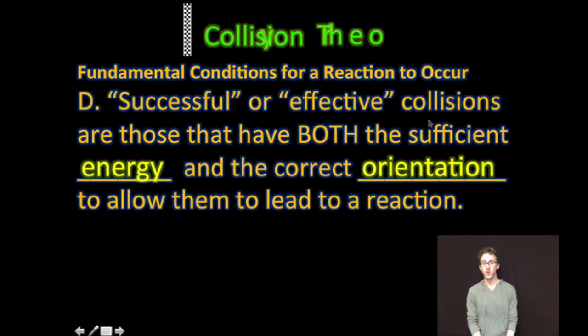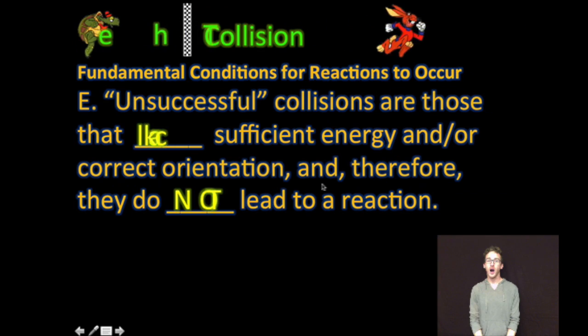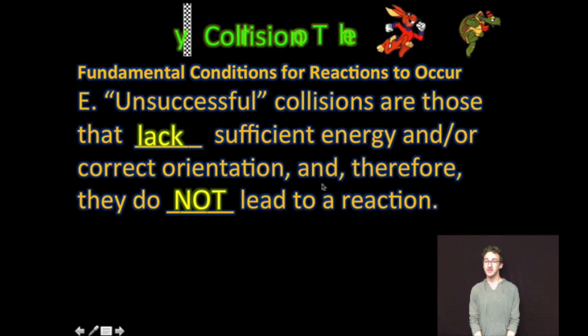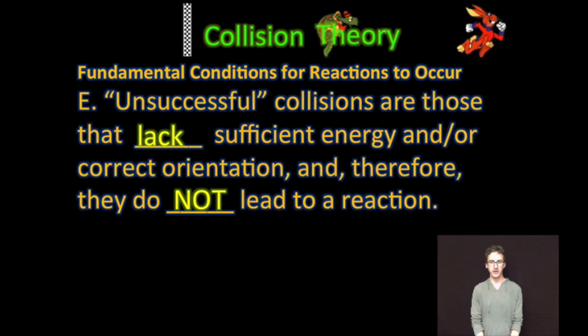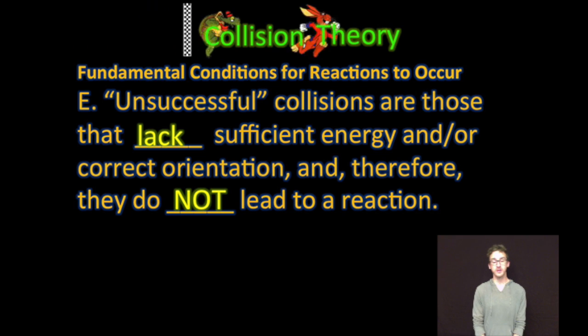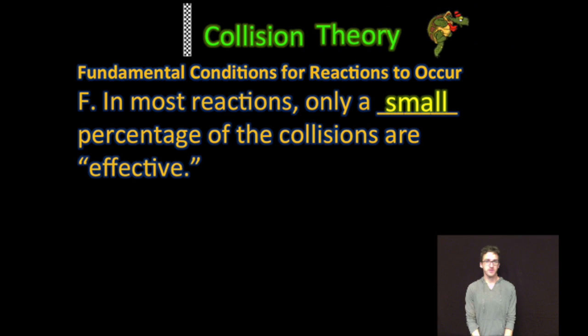So again, successful or effective collisions are those that have both the sufficient energy, activation energy, and the correct orientation to allow them to produce product in order for reaction to happen. Unsuccessful collisions are those that lack sufficient activation energy and/or the correct orientation and therefore they do not lead to a reaction. So both conditions must be met in order for a successful collision to occur. And lastly keep in mind that in most reactions only a small percentage of the collisions are effective collisions.